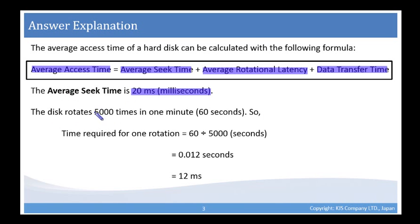This disk rotates 5000 times per one minute, so 60 seconds. So the time required for one rotation is 60 divided by 5000. We can see that the units here would work out. This is equal to 0.012 seconds, or 12 milliseconds.